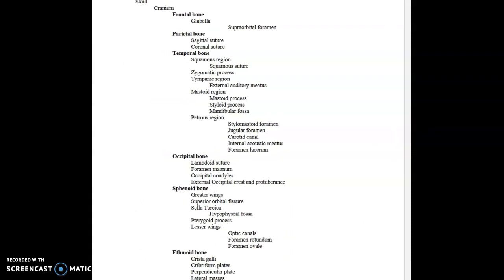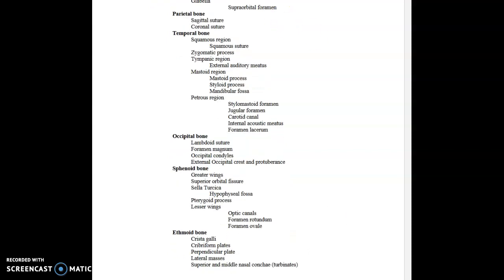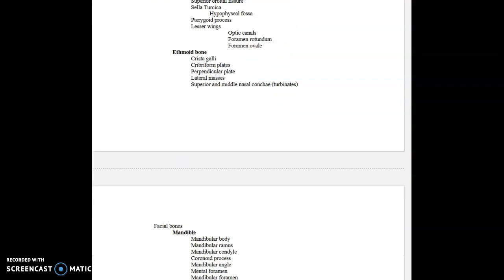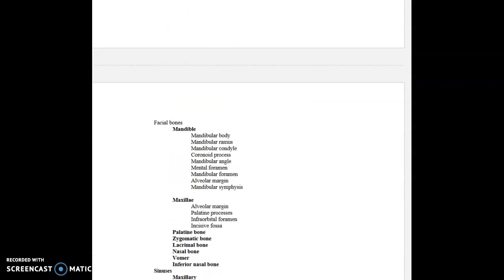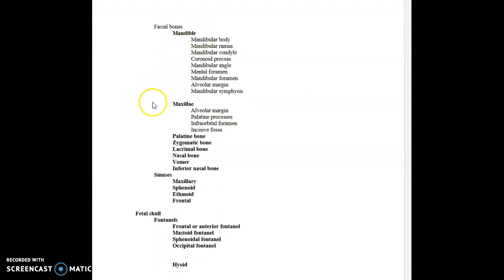From our structure sheets, we have covered the frontal, parietal, temporal, occipital, sphenoid, and ethmoid bones. We'll come back and look at the parts of them. Our facial bones — the mandible, maxilla, palatine, zygomatic, lacrimal, nasal, vomer, and inferior nasal conchi — don't have nearly as many parts to them, with the exception of the mandible and maxilla.